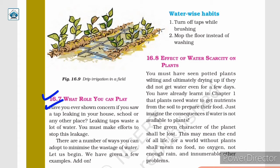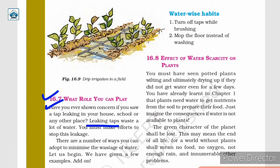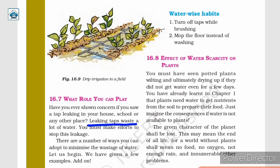What role can you play? Have you ever shown concern if you saw a tap leaking in your house, school, or any other place? Leaking taps waste a lot of water, and you must make efforts to stop this leakage. You can either bring it to the notice of an adult so the tap can be repaired, or fix it immediately. This is one way of saving water, because leaking taps waste a lot of water.